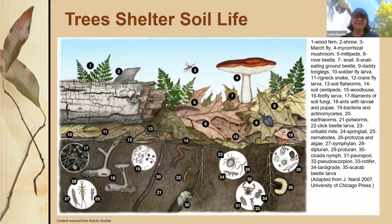Moving down below the tree canopy, trees shelter a range of life on the forest floor — all kinds of critters take part in creating a healthy and dynamic forest ecosystem. I recently heard a discussion on NPR with Susan Simard, a professor of forest ecology at the University of British Columbia. She talks about the interrelationship of trees and the chemical and biological exchanges that take place within the soil.